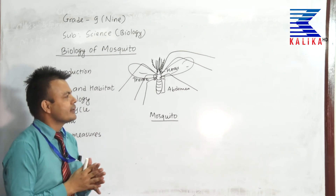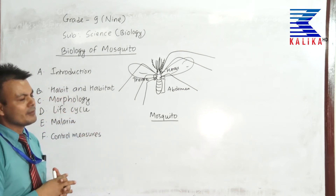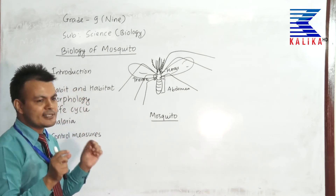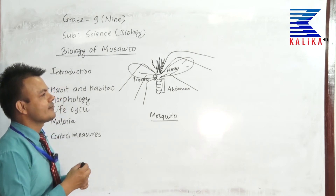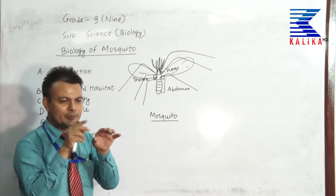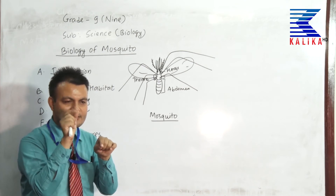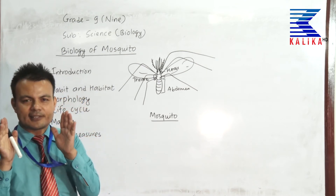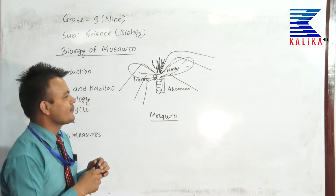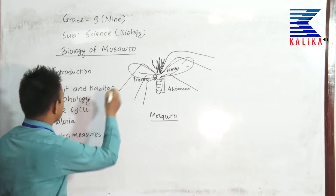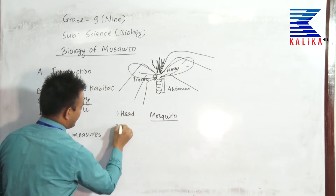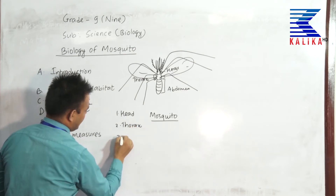Morphologically, the mosquito is a small insect having three to four millimeters in length, about half a centimeter. It is soft and slender — cylindrical in structure. It is gray and black in color. It is scaly, meaning it has got scales — when you kill a mosquito you will have some sort of scales on your hand. It is a typical insect, so the body is divisible into three main parts: head, thorax, and abdomen.